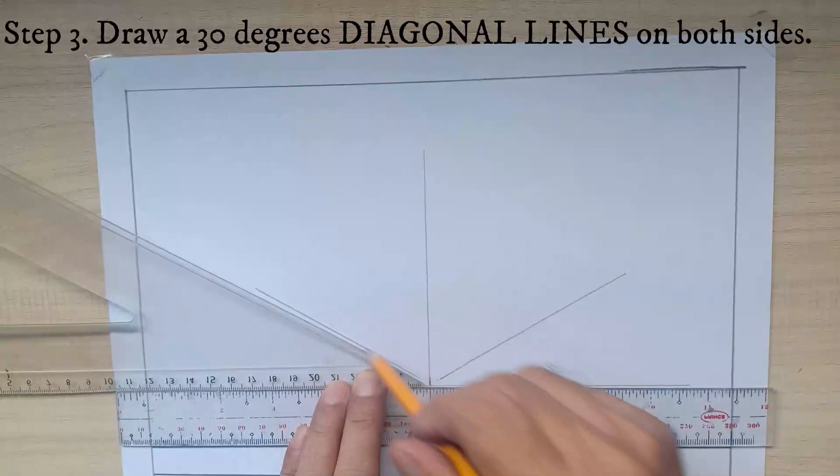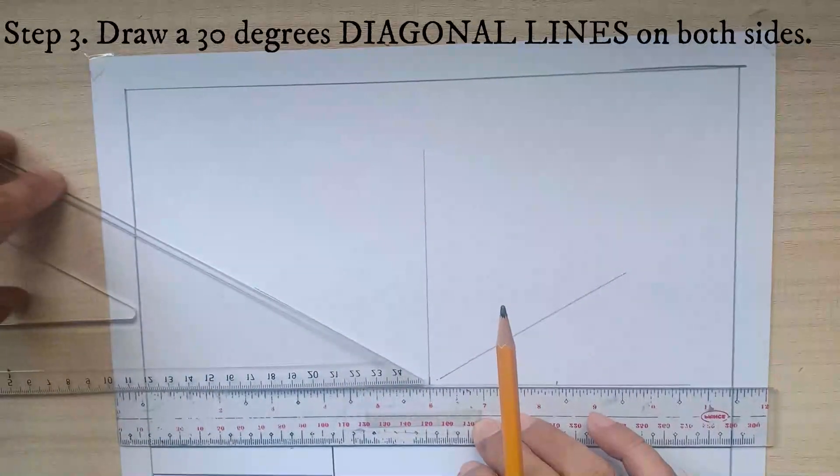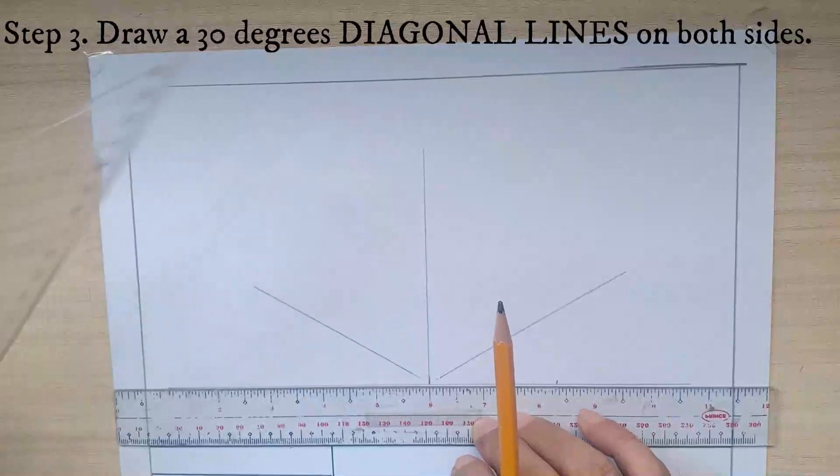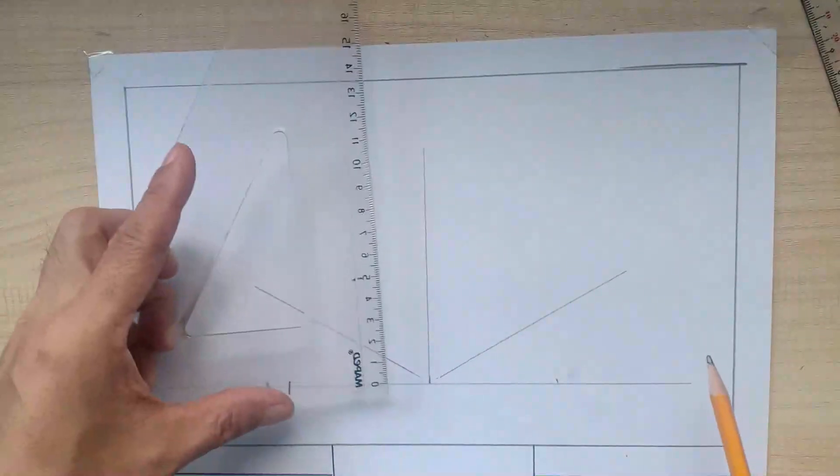This line should be 30 degrees using your triangle. If you don't have a triangle, you can use a protractor, just measure a 30 degrees line.